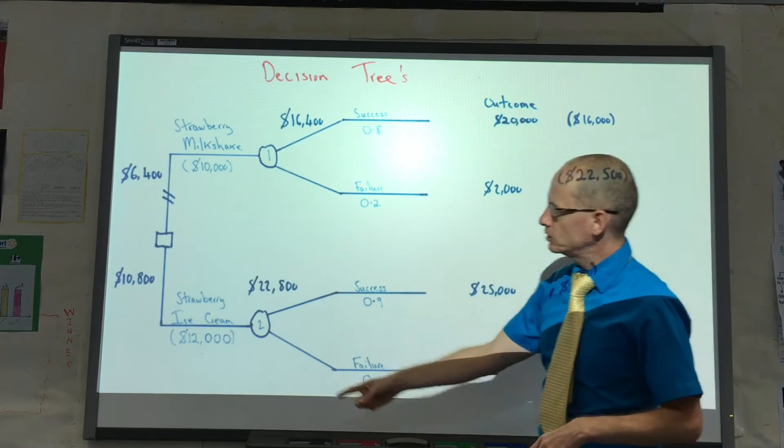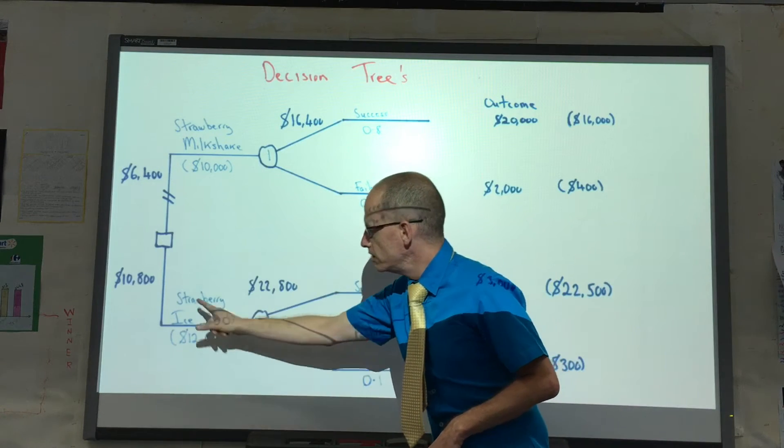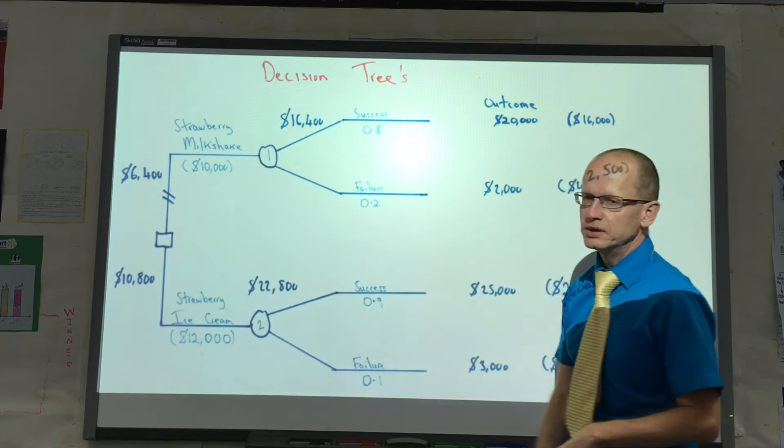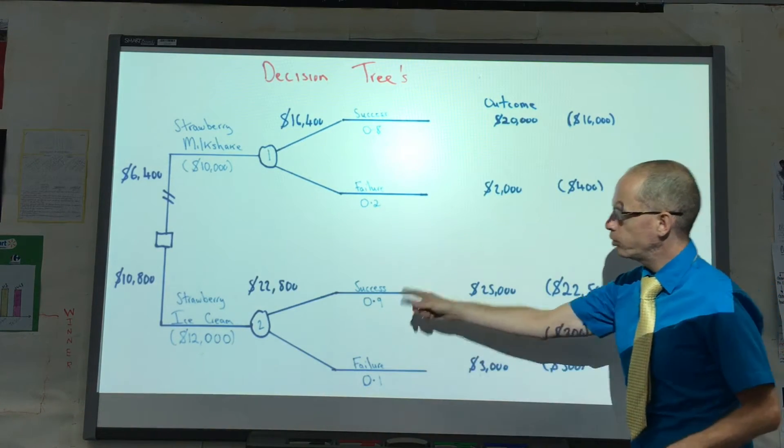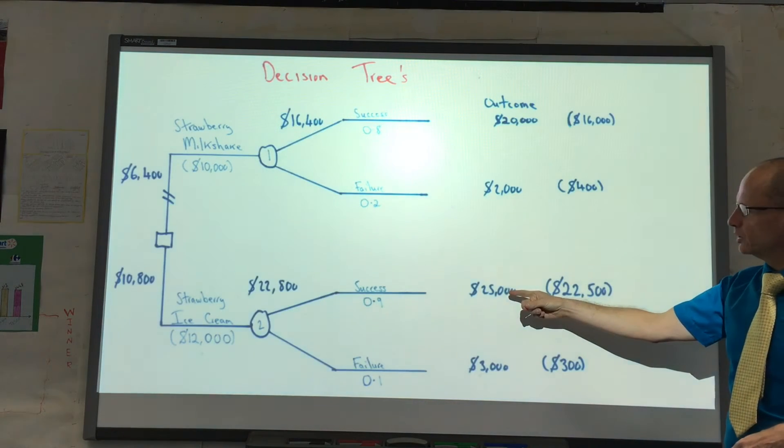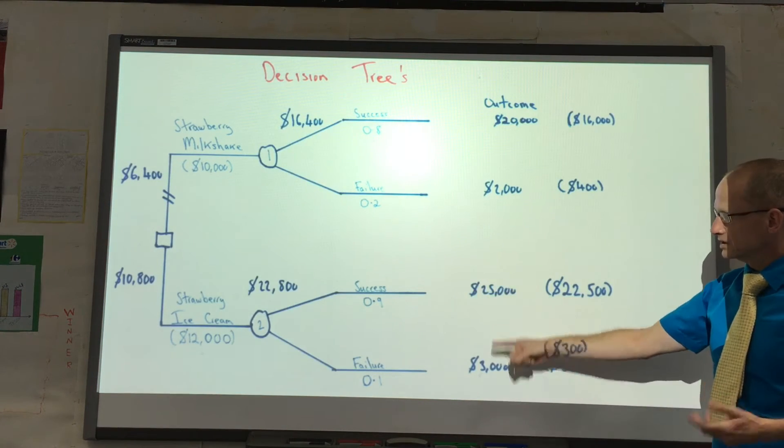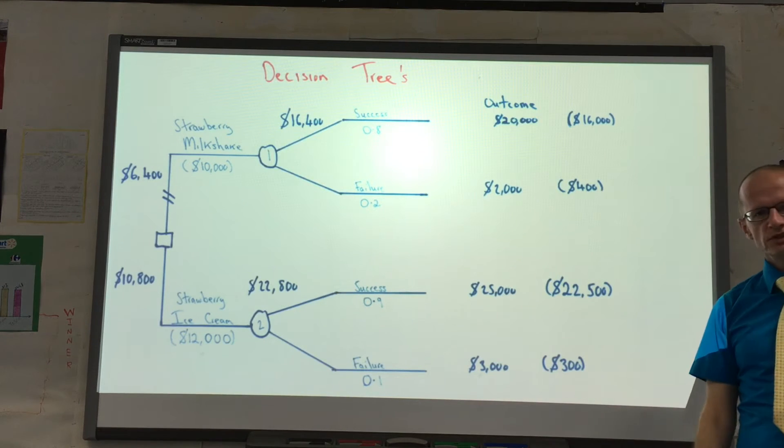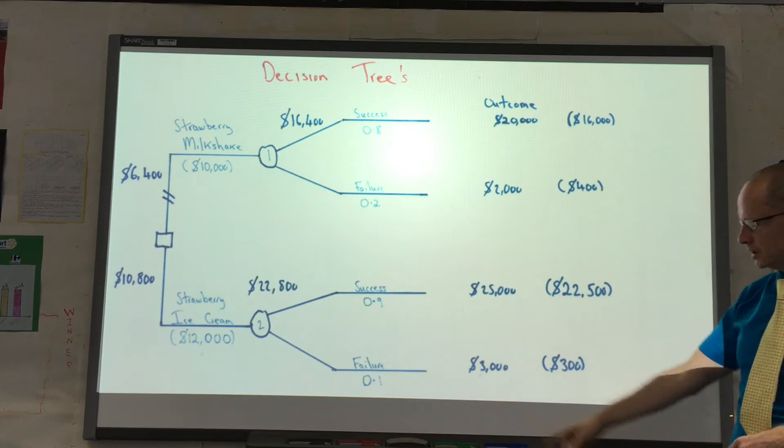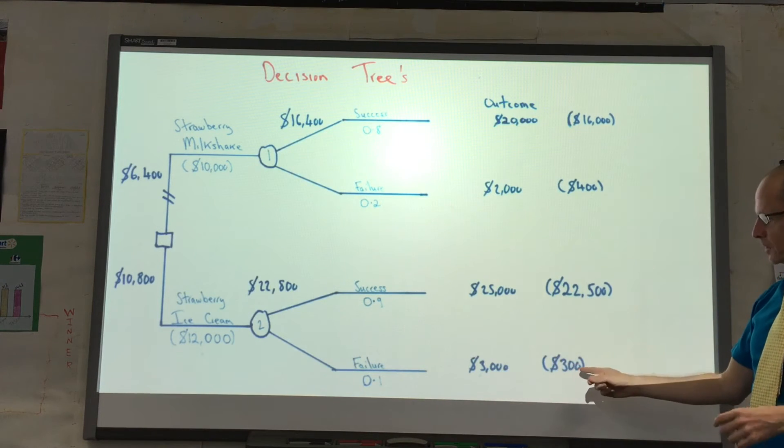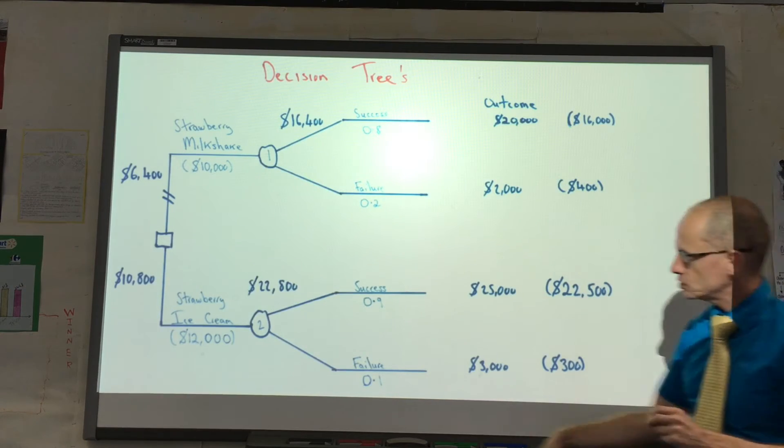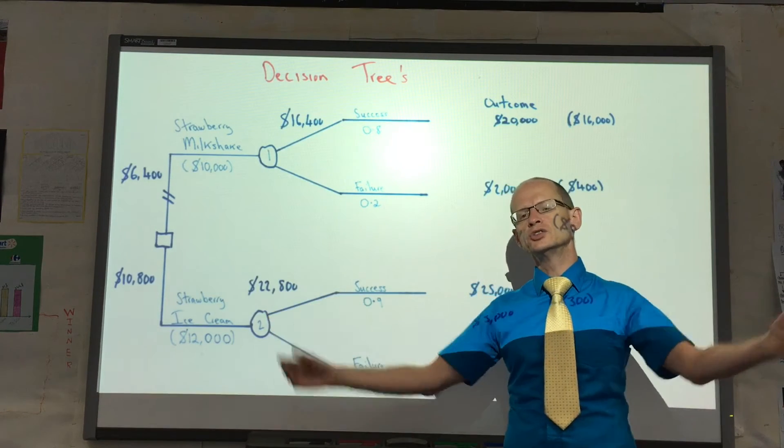Then we just follow a similar pattern with the strawberry ice cream. The cost is $12,000. I've estimated that the chances of success are 0.9, failure 0.1. The expected outcomes are $25,000 if it's a success and $3,000 if it's a failure. So 0.9, 90% of $25,000 is $22,500. 10% of $3,000 is $300. If we add those together we get $22,800.